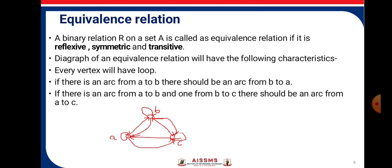A binary relation R on a set A is called an Equivalence Relation if it is reflexive, symmetric, and transitive. The digraph of an equivalence relation will have the following characteristics: every vertex will have a loop; if there is an arc from A to B, then there should be an arc from B to A; and if there is an arc from A to B and one from B to C, there should be an arc from A to C — that is the transitive property.